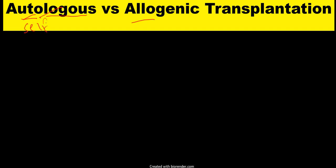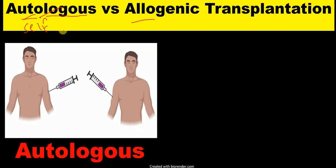So, in this kind of transplantation, the person receives his own stem cells. In autologous transplantation, the person donating stem cells and the person receiving stem cells are the same. This kind of transplantation is called autologous transplantation.